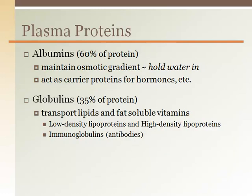Globulins are 35% of the 7% of plasma proteins and are also made in the liver, except the immunoglobulins, which are made by the immune system. Globulins are made of protein and lipids, so they are referred to as lipoproteins. Globulins are used to transport fat-soluble substances through the blood, which is mostly water. The fat-soluble substance, like cholesterol, binds to the lipid part of the globulin, and the protein part makes it able to easily travel through the blood.